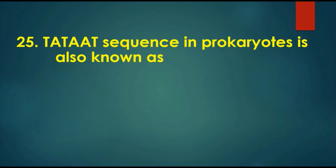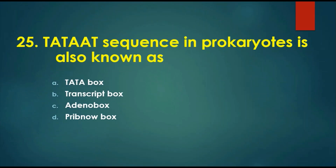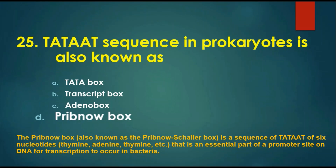Question 25: The TATAAT sequence in prokaryotes is also known as — options are: A) TATA box, B) transcript box, C) adeno box, D) Pribnow box. The answer is the Pribnow box, also known as the Pribnow-Schaller box. It is a sequence of six nucleotides (T-A-T-A-A-T) and is an essential part of a promoter site on DNA for transcription to occur in bacteria. That concludes Series 3. In the next video, Series 4, we will cover 25 more important questions. Thank you.